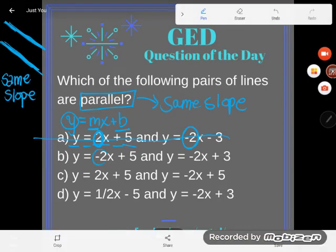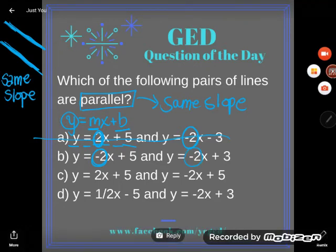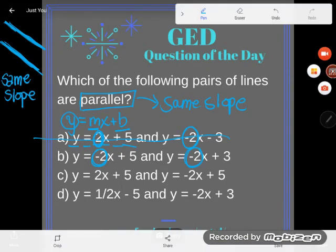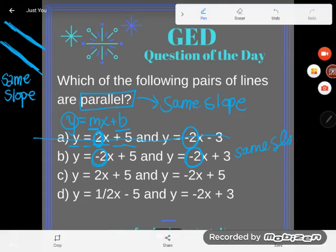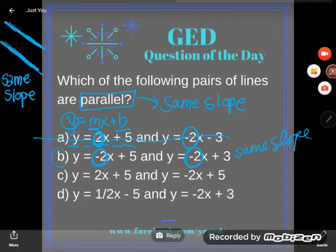Let's try the next one. On this one, the m, the number multiplying x is negative 2, and on this one, the m, the coefficient, the number multiplying x is negative 2. You can see that they have the same slope. These must be parallel. Now let's just go check the other two just to make sure B is the right answer.